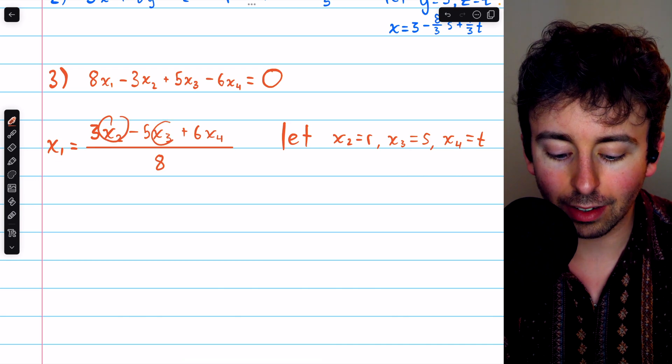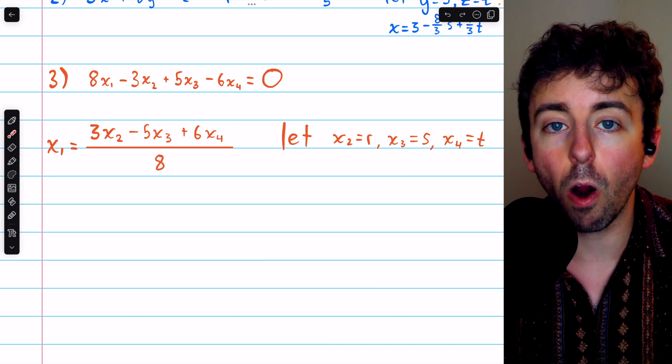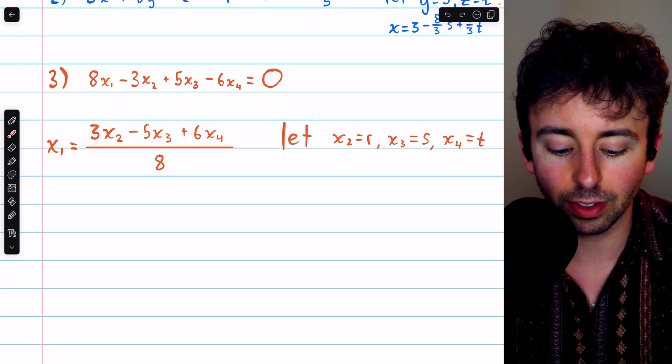Now we see that x2, x3, and x4 are free variables, so we'll assign them to arbitrary parameters. Say x2 equals r, x3 equals s, and x4 equals t.